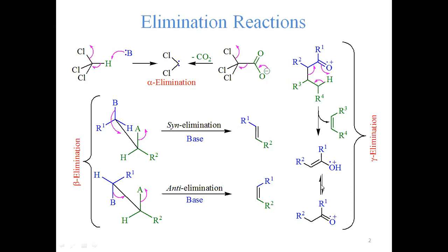Alpha elimination results in the formation of carbenes, nitrenes, etc. Gamma elimination does not take place in chemical laboratories — it occurs in mass spectrometer ionization chambers. Since alpha elimination intermediates like carbenes and nitrenes have already been covered, our focus at this moment is beta elimination.